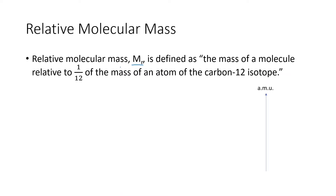For example, if we were to plot on this scale in atomic mass units the masses of atoms or molecules, we have the mass of the carbon-12 isotope plotted somewhere over here, which is given a mass of 12 AMU or 12 units. So if we were to find the relative molecular mass of a molecule, for example water, good old H2O.